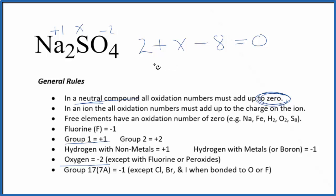Now we just solve for X. X minus six equals zero. Add six to both sides. X equals a positive six. So the oxidation number on the sulfur here in Na2SO4, that's going to be plus six.